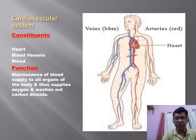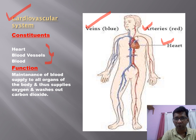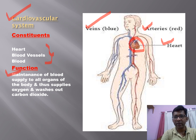The cardiovascular system — cardio means heart, vascular means vessels. The constituents are the heart, blood vessels (arteries and veins), and blood. Their function is maintenance of blood supply to all organs of the body, supplying oxygen and washing out carbon dioxide. The heart pumps oxygenated blood to different parts of the body via arteries, and veins bring carbon dioxide-containing blood back to the heart, which then sends it to the lungs to be expelled.